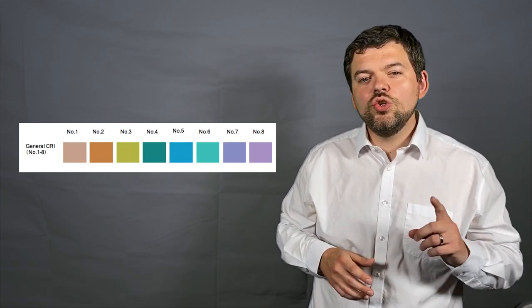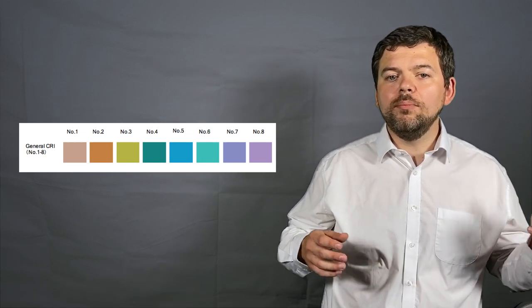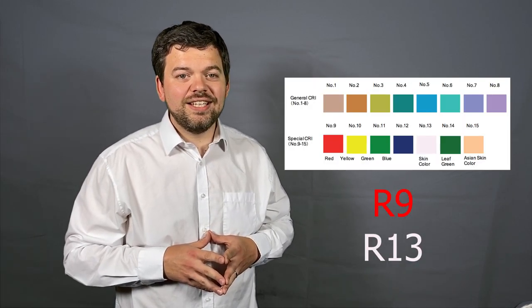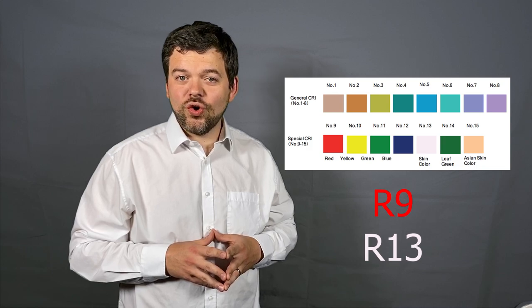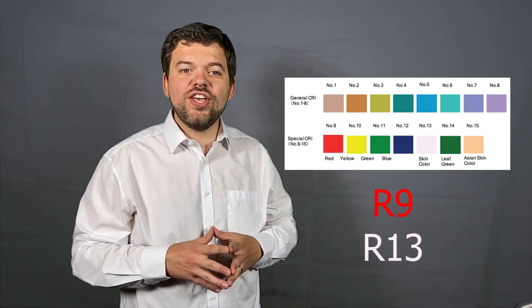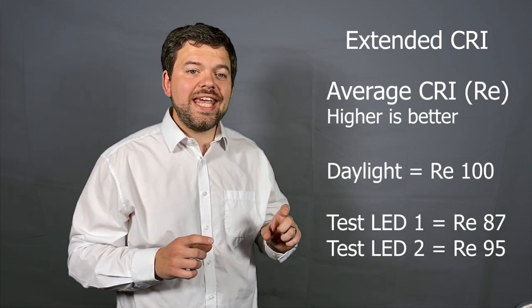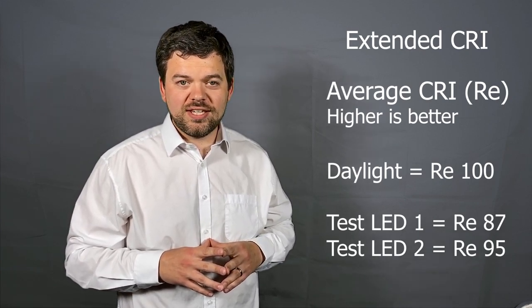Many however have said that these unsaturated colors do not help with predicting how well a source will render more vibrant colors. So six more saturated samples were added. These included red or R9 and skin tones R13. The average of this extended set is given as the RE number which is a more complete representation.